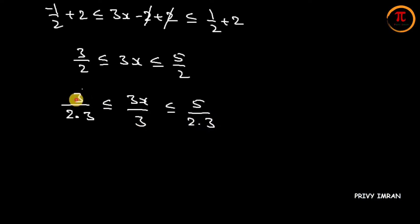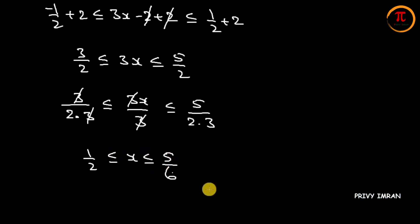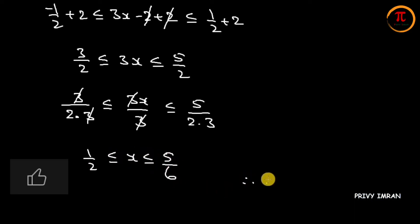The 3 and 3 cancel on both sides. Then the next step gives us 1 by 2 is less than or equal to x is less than or equal to 5 by 6. Therefore x belongs to the closed interval 1 by 2 comma 5 by 6.